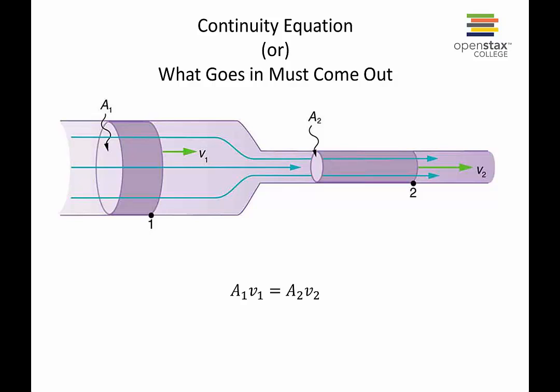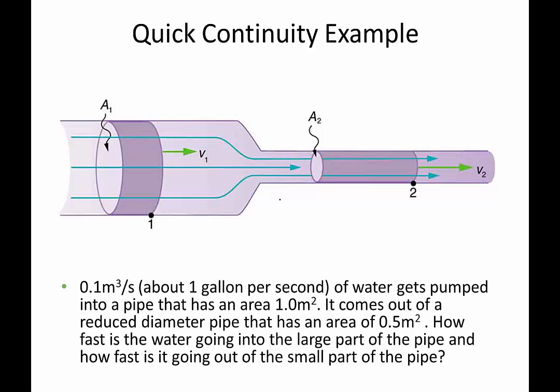Another way to think about it is that the volume per second flowing through any part of the tube is equivalent — the volume per time is always constant. If you have three gallons per second coming in the left side, you have to have three gallons per second coming out the right side. Since that area is smaller, the fluid must flow out faster. That's the whole idea of the continuity equation.